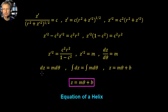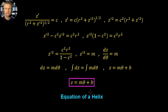We have the simple differential equation dz = m dθ. Integrating both sides gives z = mθ + b, where b is a constant of integration. This is the equation of a helix — the shortest distance between two points on the surface of a cylinder. That's all for this video.